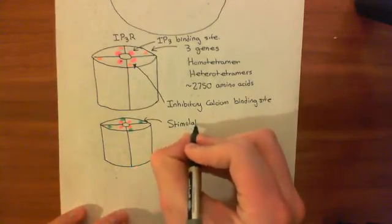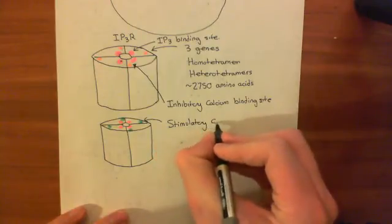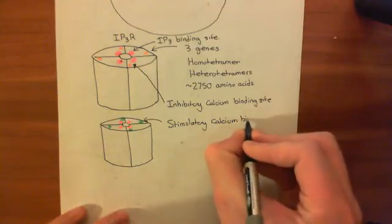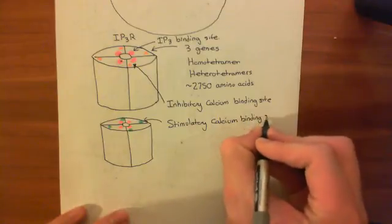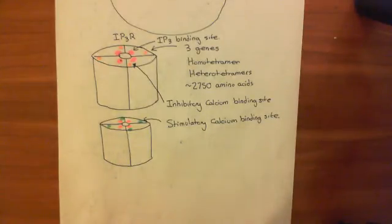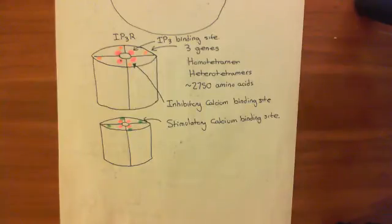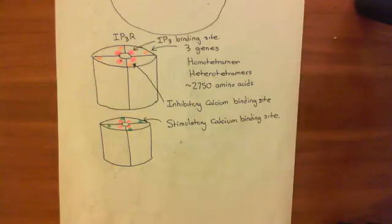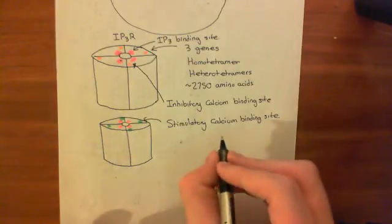Now if calcium binds to those stimulatory calcium binding sites, the IP3 receptor will open. It's a common misconception among medical students that IP3 actually opens the IP3 receptor. Instead, IP3 primes the IP3 receptor ready to open it — it puts it into a state where calcium can actually trigger it to open. It is calcium that actually opens the receptor, not IP3. IP3 changes the conformation of the IP3 receptor so that calcium can now open it.